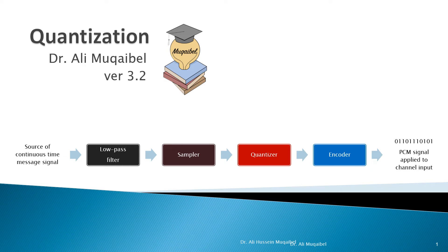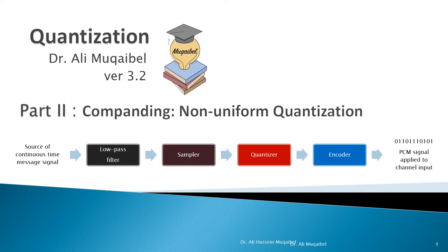All right, now we have been working with uniform quantization. We will start now considering non-uniform quantization, the companding process.